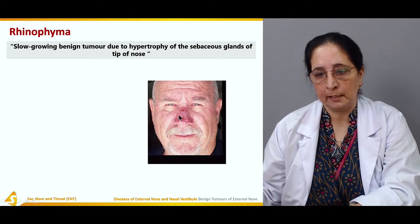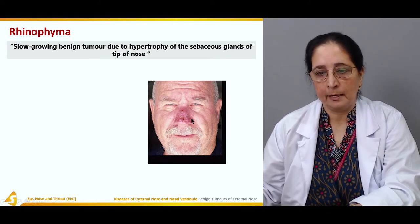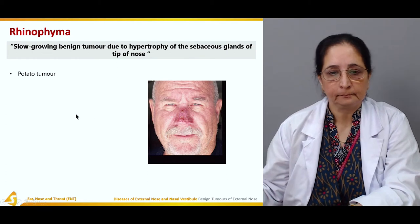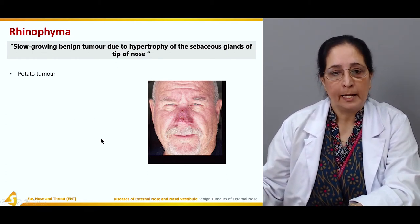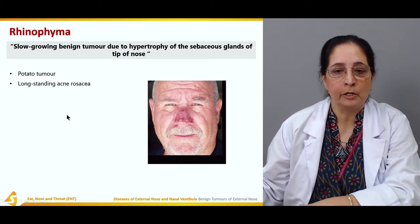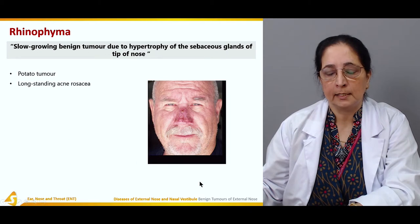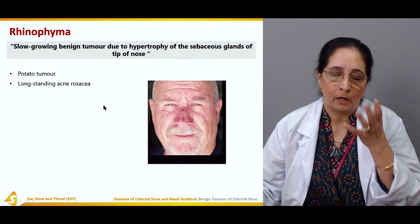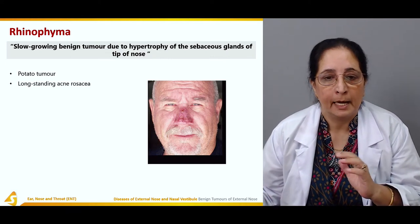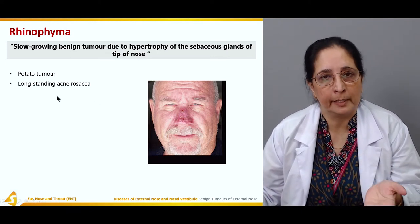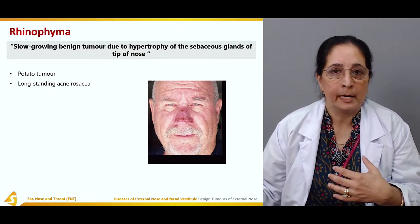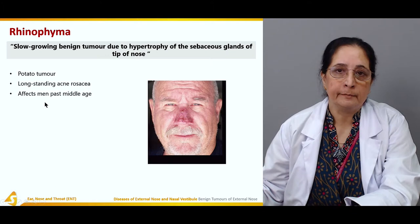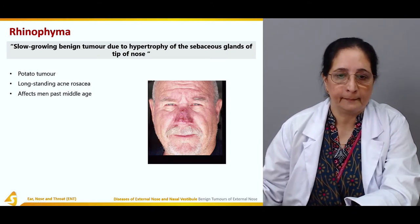In this diagram you can see a male after middle age with rhinophyma present. It is also known as the potato tumor. It usually results from long-standing acne rosacea — a condition with red spots on the face that can progress to rhinophyma if it persists. It affects men more than women after middle age.